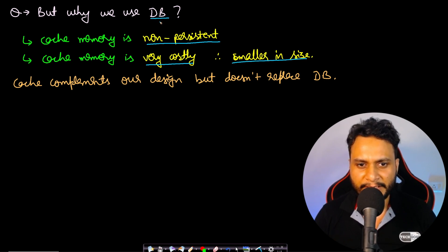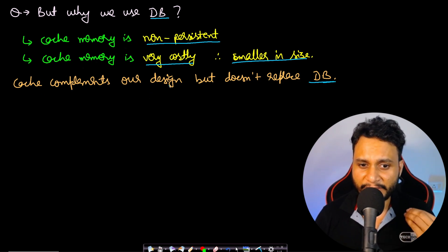The second thing is cache memory is very costly, therefore it is smaller in size. Whereas the database is very cheap, so it can be very large and accommodate a large amount of data. Database is also persistent memory. You can think the difference between our hard disk, compare it to the database, and the RAM, compare it to the cache. Cache actually complements our design, but it doesn't replace the database.